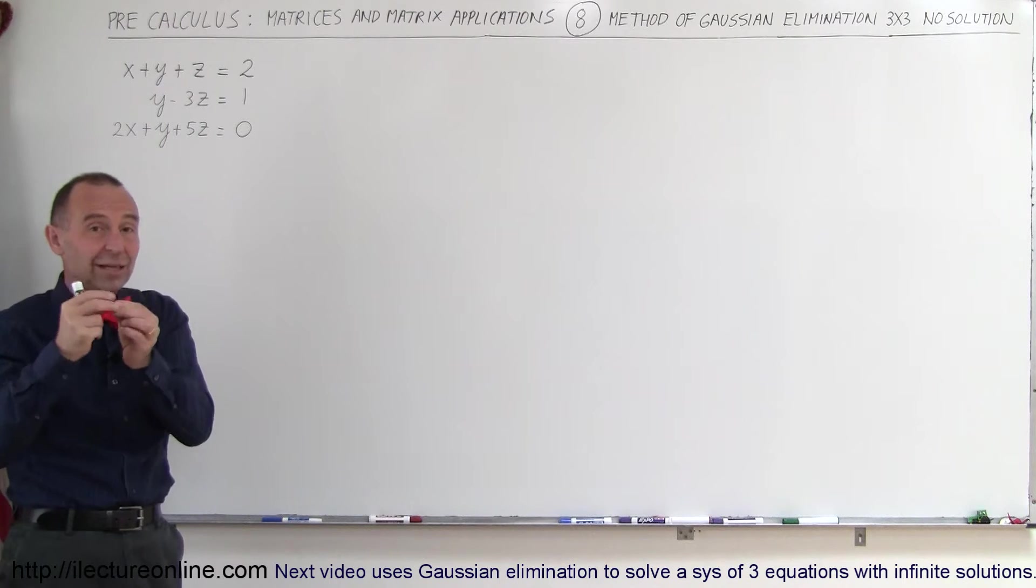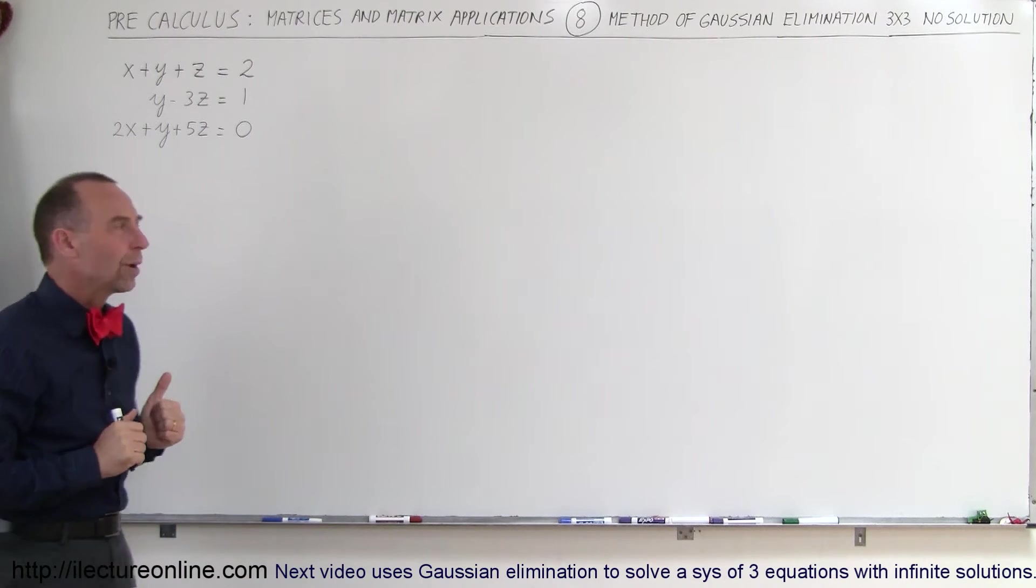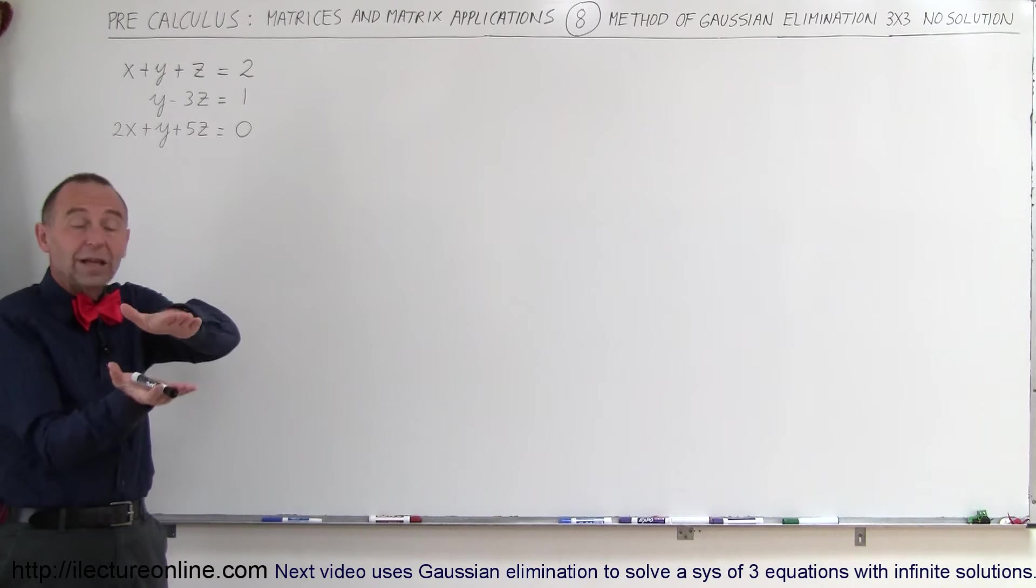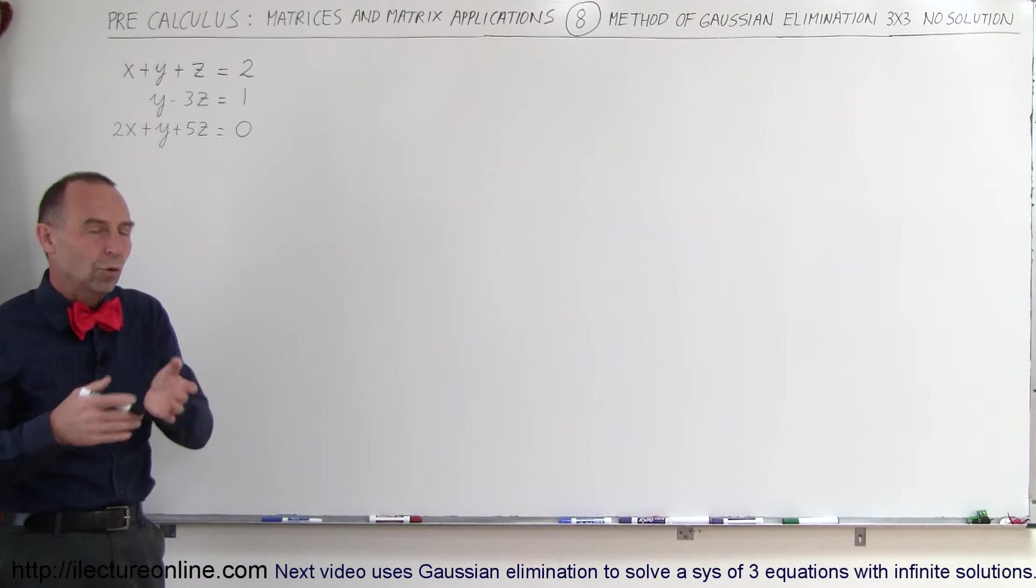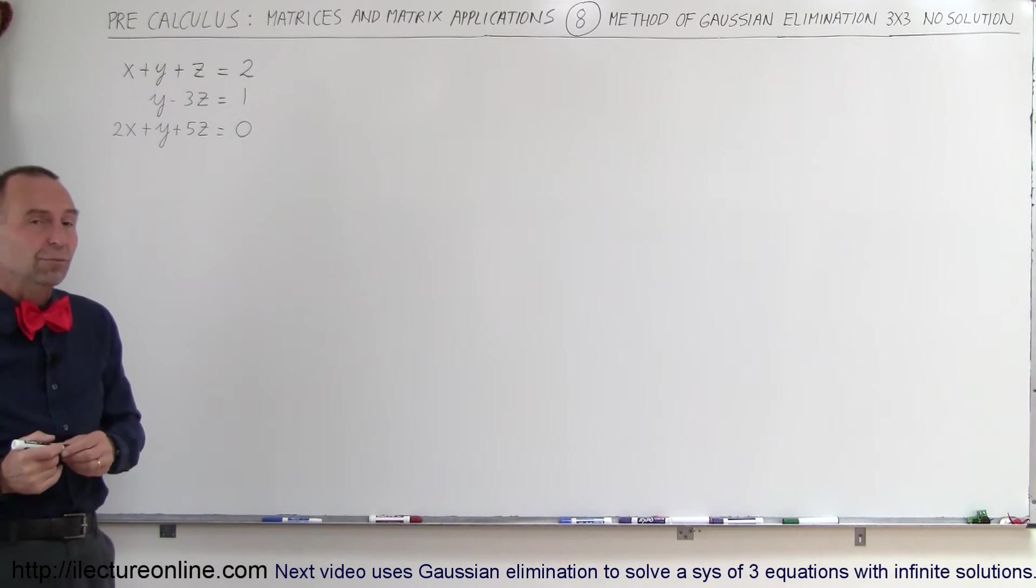That spot will have an x, y, and z coordinate value that will be the solution of these three equations. Sometimes that doesn't happen. For example, when two planes are parallel, they will never intersect and there will not be a solution. Here we have an example with no solution and you can see what happens when we try to solve it using the Gaussian elimination method.